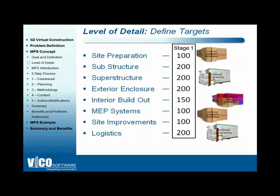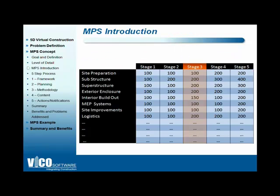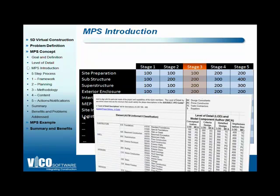At any point in time, you want to define stages and set targets for each group of information in your model, cost plan, and estimate — that is the target level of detail for a stage. For example, site preparation needs to be at LOD 100 in stage 1, while interior build out needs to be at LOD 150, requiring space planning to make decisions. After deciding how many stages you want, you can start defining the progression for each building element category.